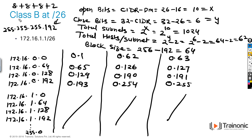Again, when doing the subnetting of Class B at slash 26: open bits formula is CIDR minus default, 26 minus 16 equals 10. Close bits: 32 minus CIDR, 32 minus 26 equals 6. Total subnets: 2 raised to X, which is 2 raised to 10, equals 1024. Total hosts per subnet: 2 raised to Y minus 2, so 2 raised to 6 minus 2, equals 62.